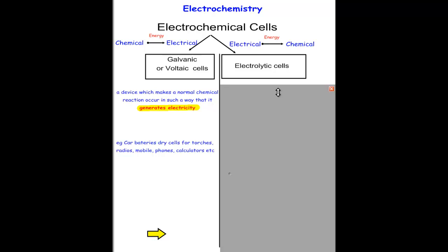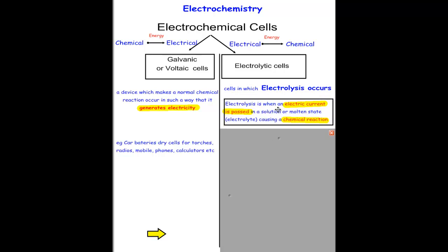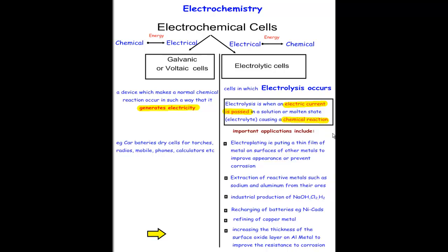In the electrolytic cells, we are using a process called electrolysis. What is electrolysis? Basically, electrolysis is when an electric current is passed in a solution or molten state called the electrolyte causing a chemical reaction.